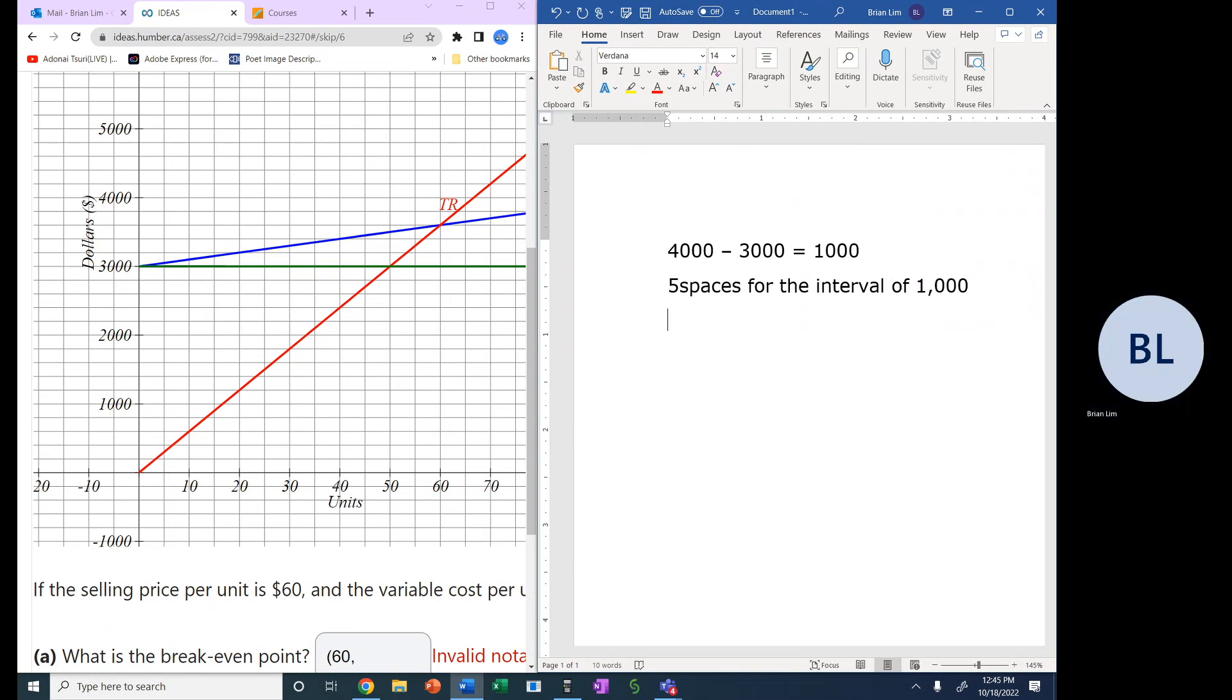So 5 spaces for the interval of 1,000. Therefore, 1 space would be equal to, or 1 division, you can say, would be 1,000 divided by 5. It should be equal to $200. So $200 per space.